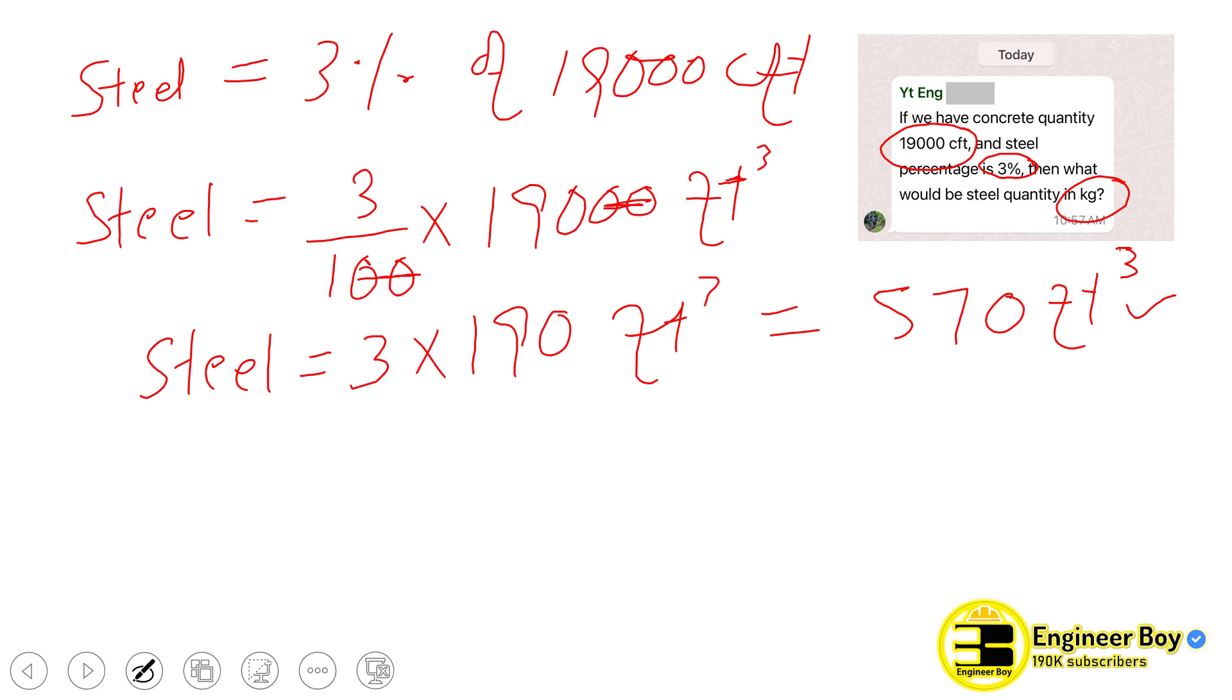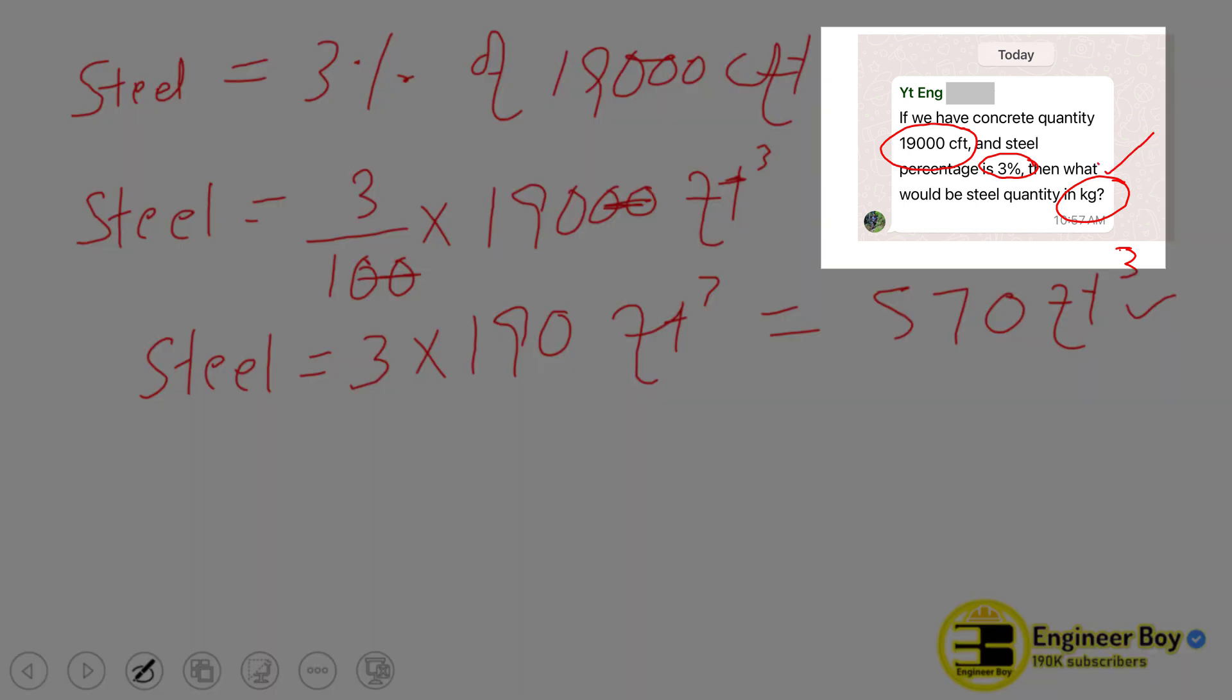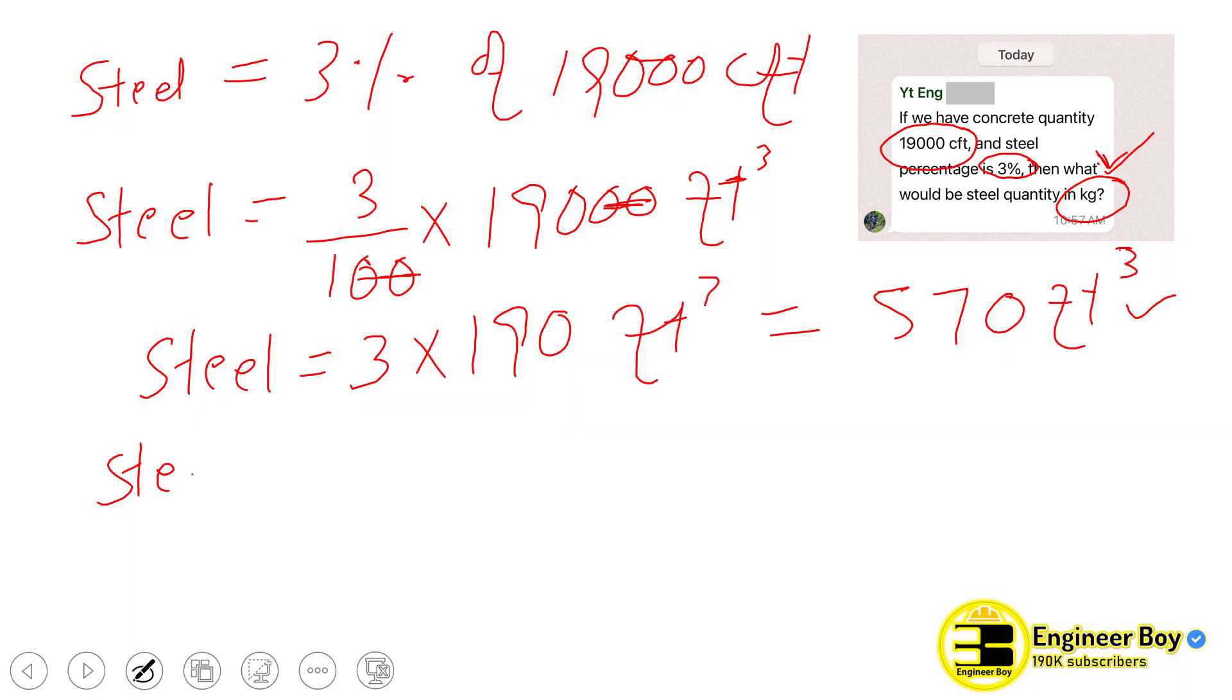So this is the quantity of steel, but this is in form of volume in cubic feet. He's asked what should be the quantity of steel in kg, which means we have to multiply the volume with density.